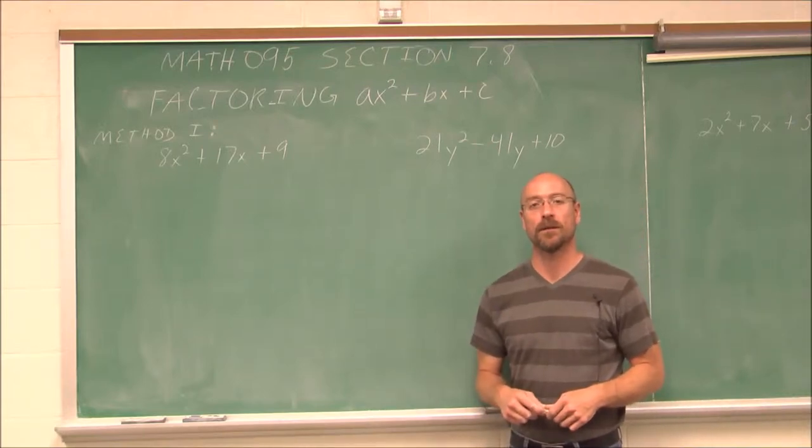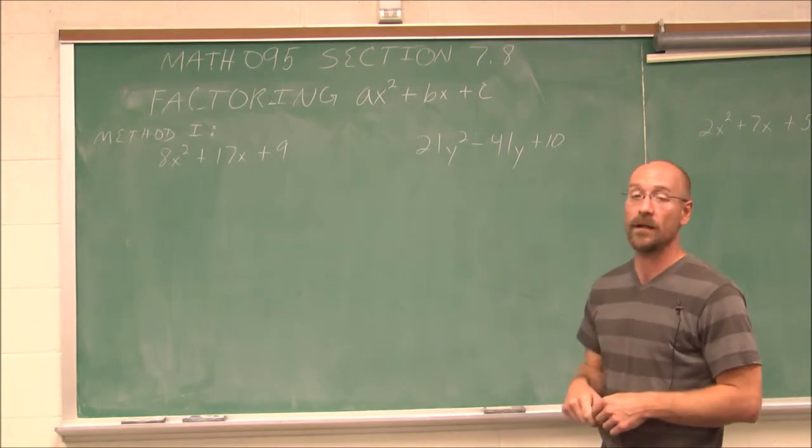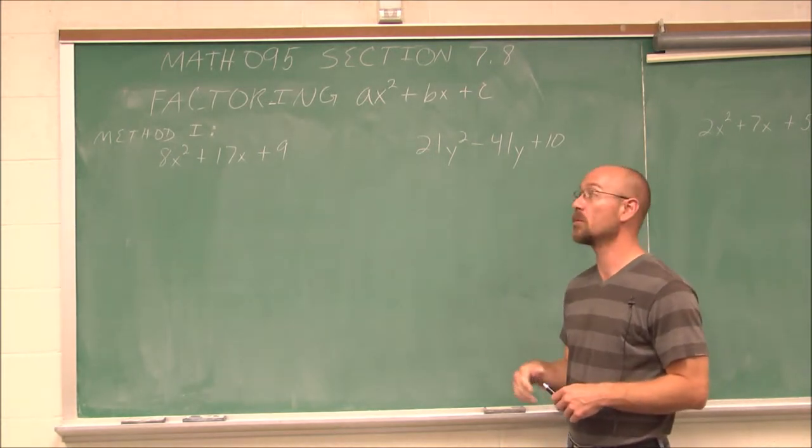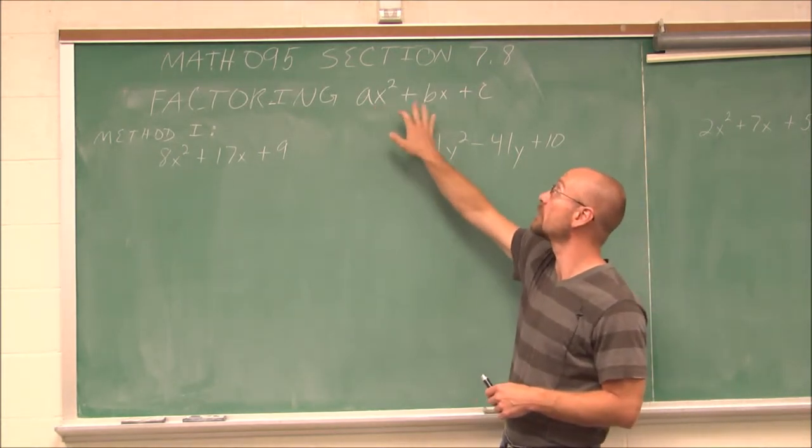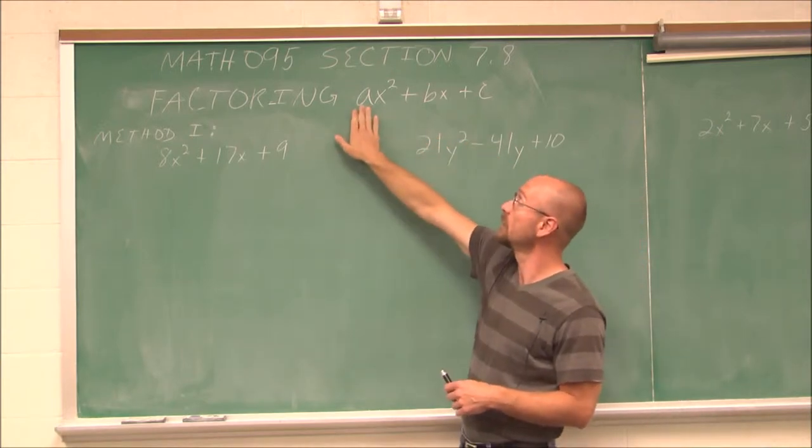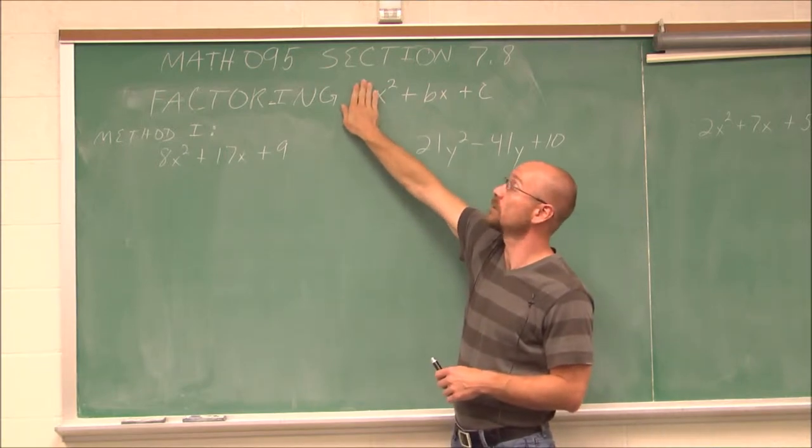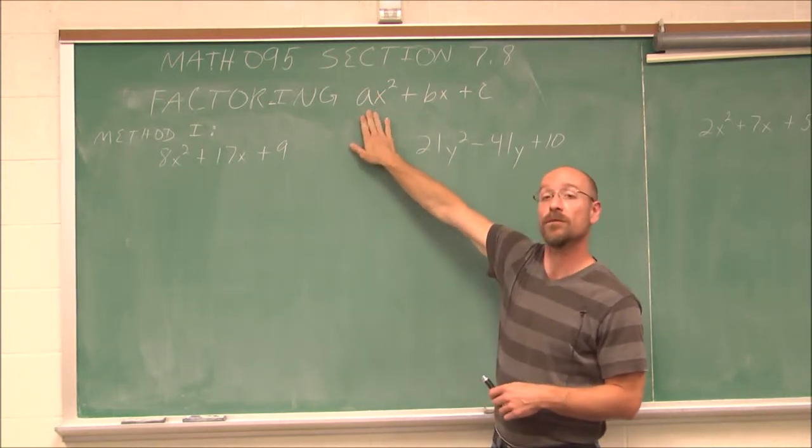Hello, and welcome to Bay College's video lectures for Math 095. This is section 7.8. We're going to look at factoring trinomials of the form ax squared plus bx plus c. In the previous section, we factored these trinomials that had a coefficient of 1. Well, what if that coefficient isn't 1?